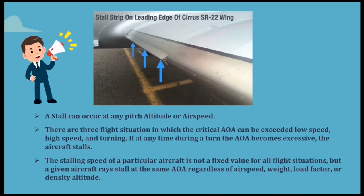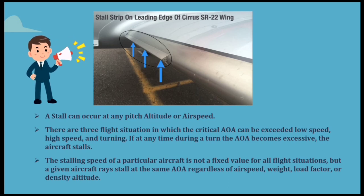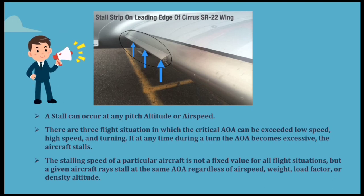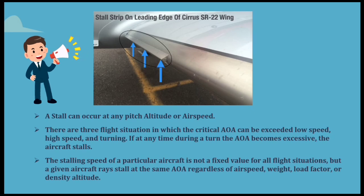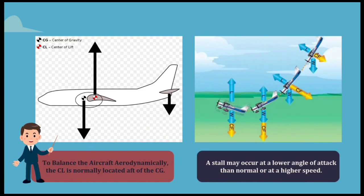This is the stall strip on the leading edge of a Cirrus SR-22 wing. Stall strips are used to initiate flow separation at chosen locations on the wing during high angle of attack flight, so as to improve the controllability of the aircraft when it enters a stall. They are typically employed in pairs, symmetrically on both wings. To balance the aircraft aerodynamically, the CL (lift coefficient) is normally located aft of the CG (center of gravity). A stall may occur at a lower angle of attack than normal or at a higher speed.